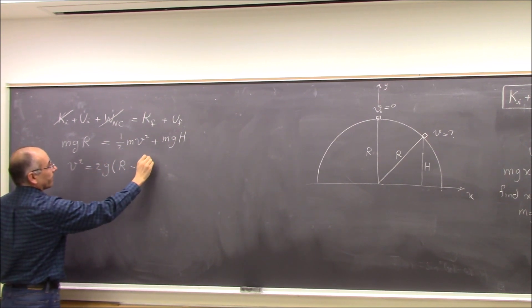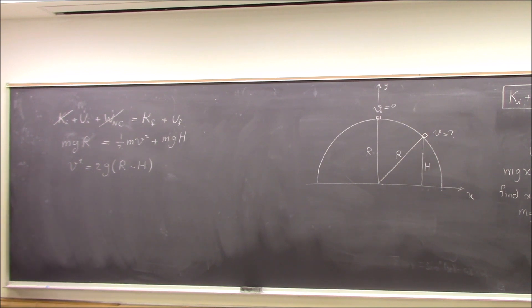If I move this over and multiply by two, cancel the M's, this is V squared. But we know that centripetal acceleration is V squared over R. So this gives us the V squared over R if we want at any H.